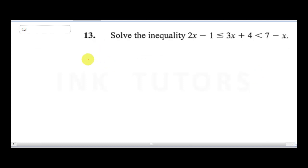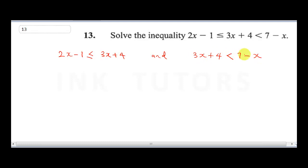To solve this type of question, you need to split it into two parts. So we say: 2x minus 1 is less than or equal to 3x plus 4, and then 3x plus 4 is less than 7 minus x. We're going to solve these individually. For the first: bringing 3x over gives minus 3x, which is less than or equal to 4, and minus 1 going over gives plus 1.